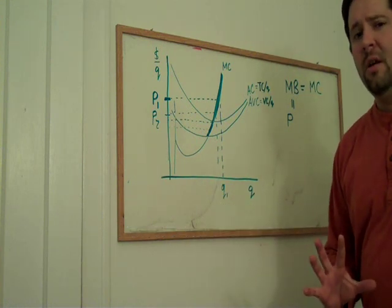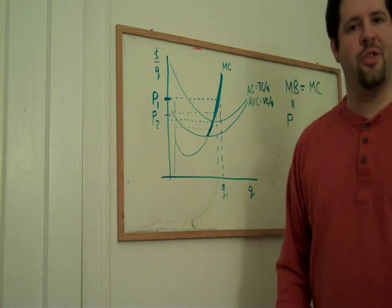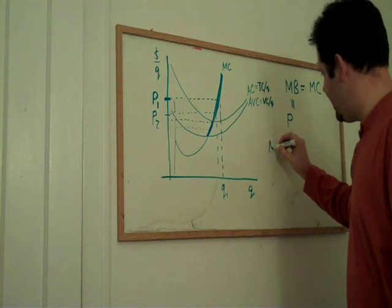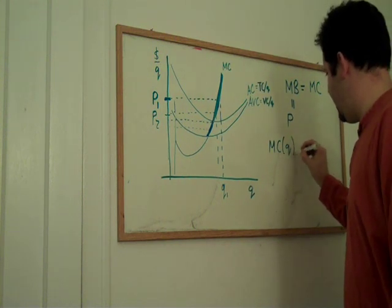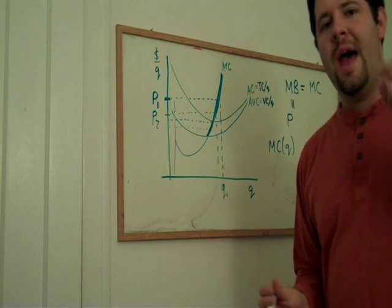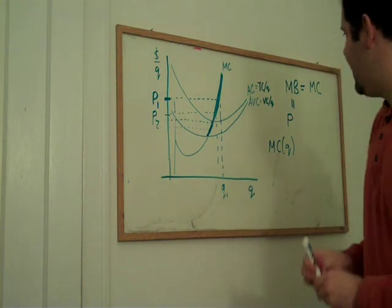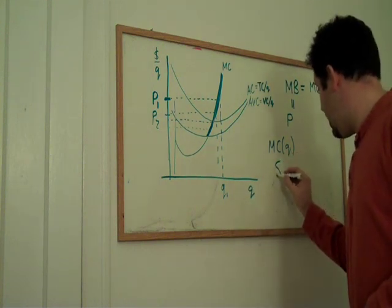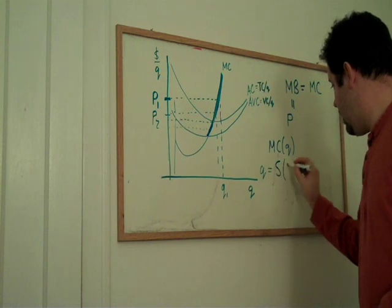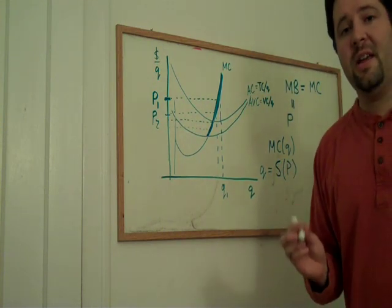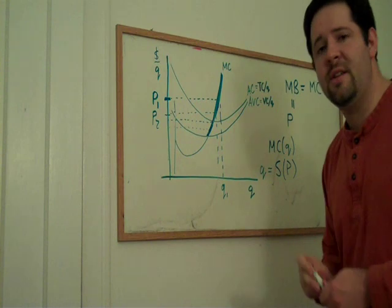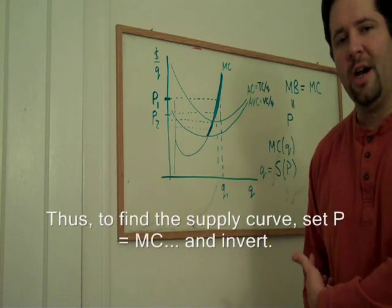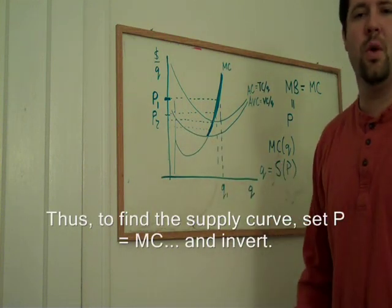Now, one thing to note here: it is not true that the marginal cost curve is the supply curve. Keep in mind that the marginal cost curve—I give you a quantity, and it tells you how much that last unit costs. It is cost as a function of quantity. On the other hand, supply is quantity as a function of price. So technically, mathematically, the supply curve is the inverse of the marginal cost curve, just so long as it's worth producing at all.